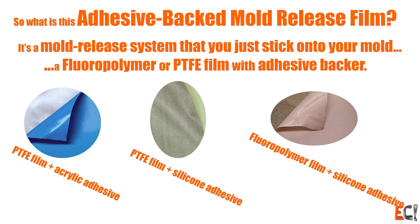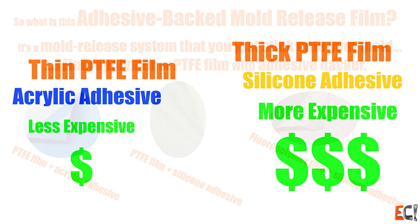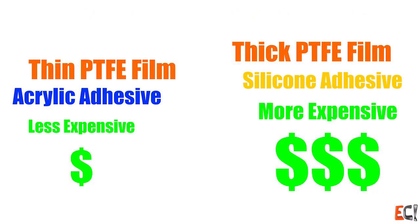Or a thin stretchy fluoropolymer film with a silicone adhesive, which is great for conforming to curved surfaces. Generally acrylic adhesive is cheaper, and thin film is cheaper. Silicone is more expensive.